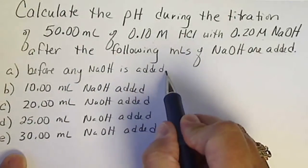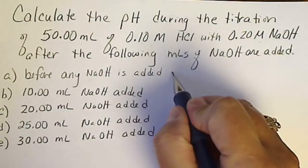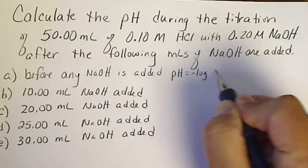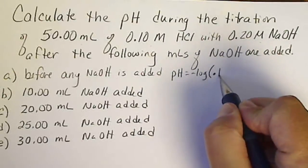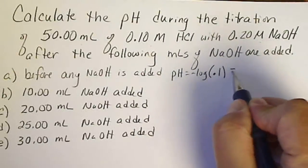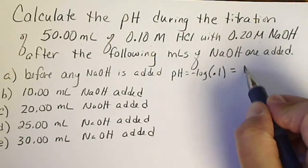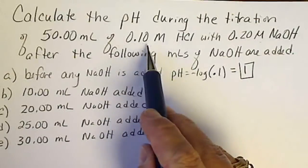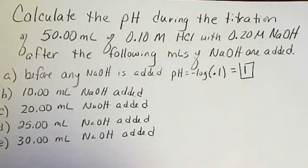So before any sodium hydroxide is added, the pH equals the negative log of the concentration of the HCl. This number is 10 to the minus 1, so here our pH would be equal to 1, because the concentration of our acid is 0.10 molar.